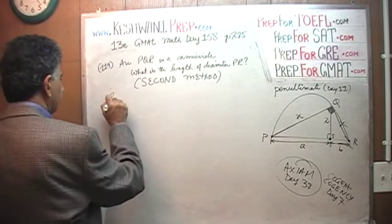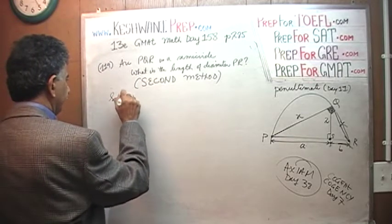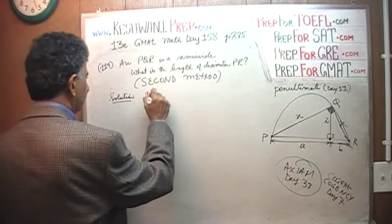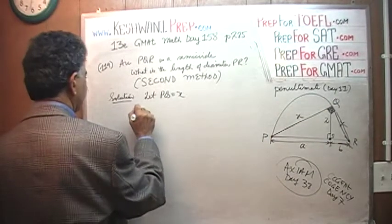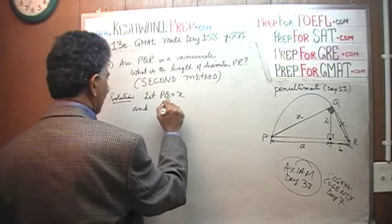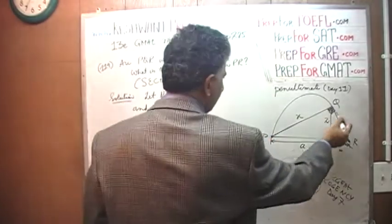Here is the solution. Let P to Q be X. P to Q is X. And Q to R be Y. Q to R be Y.